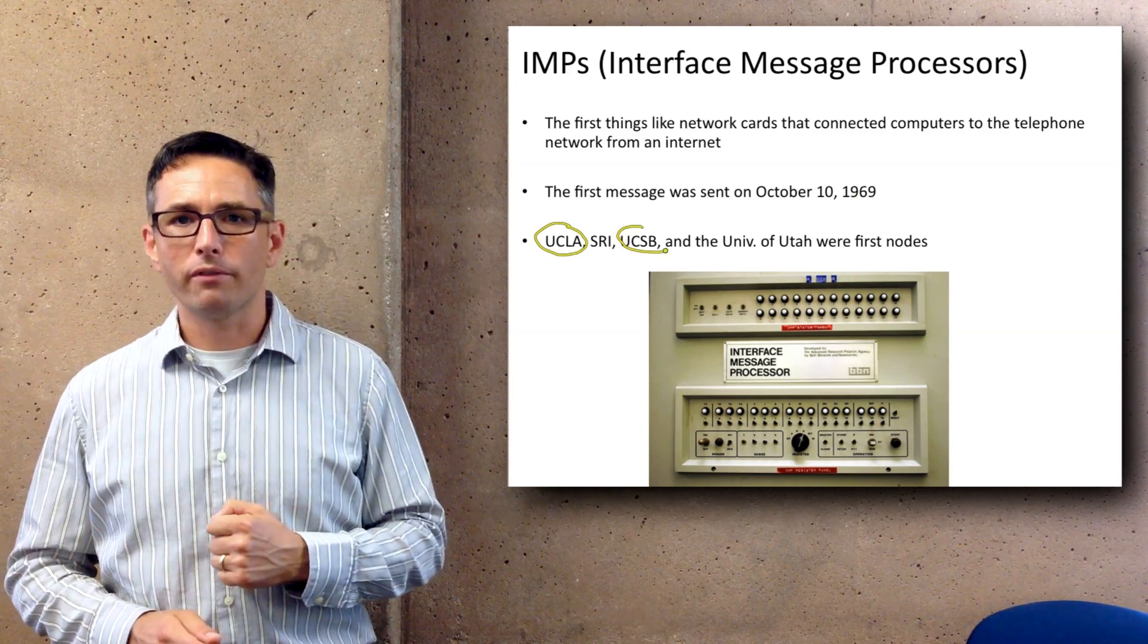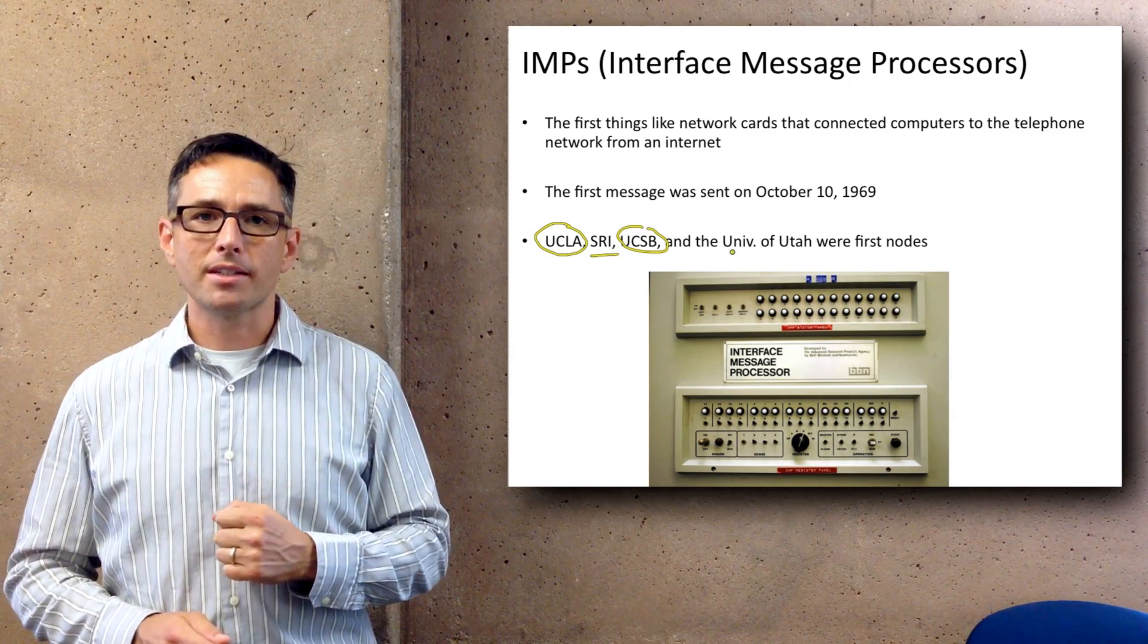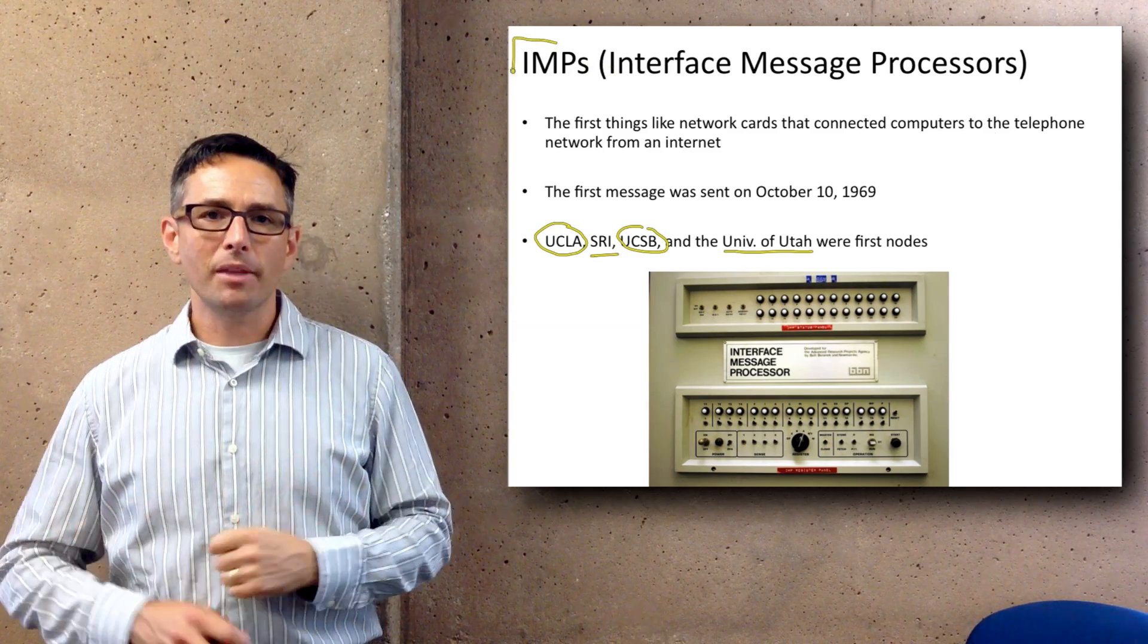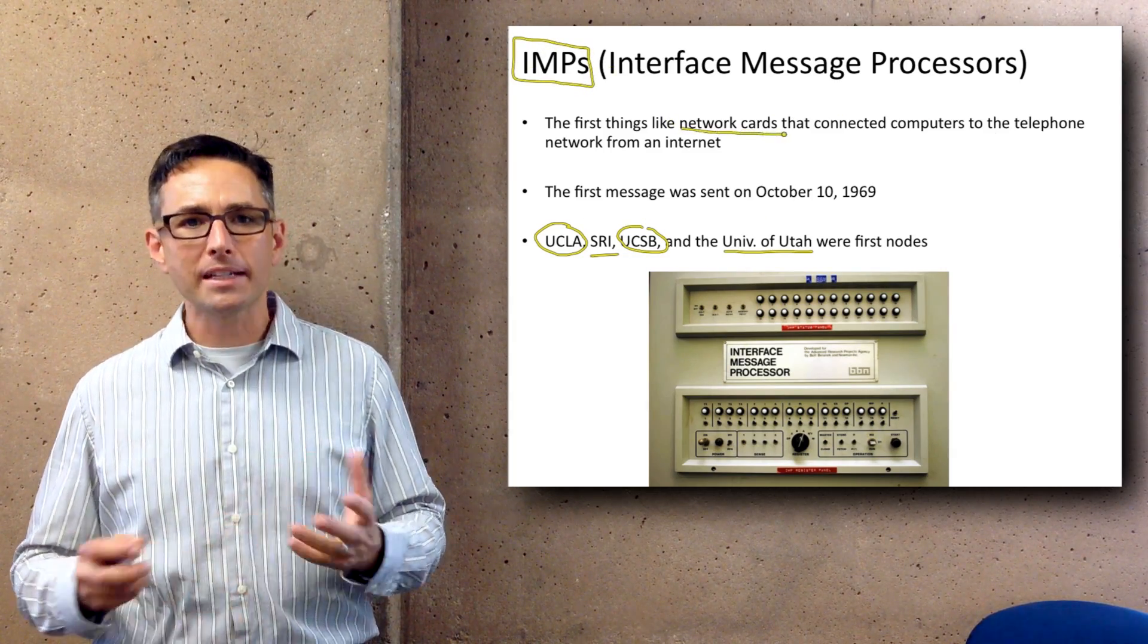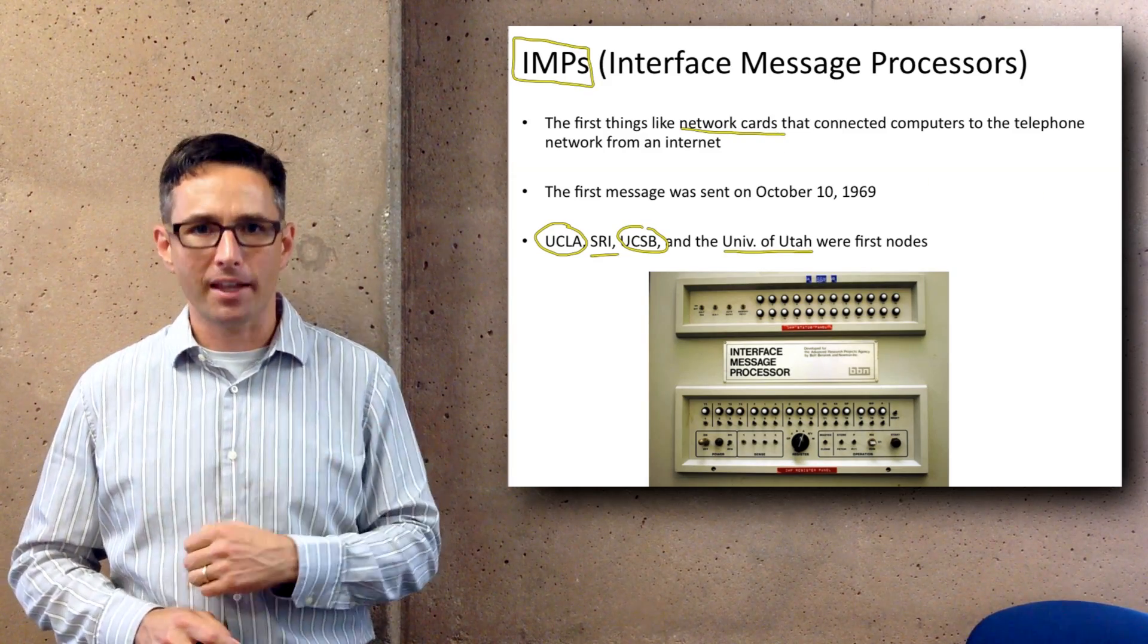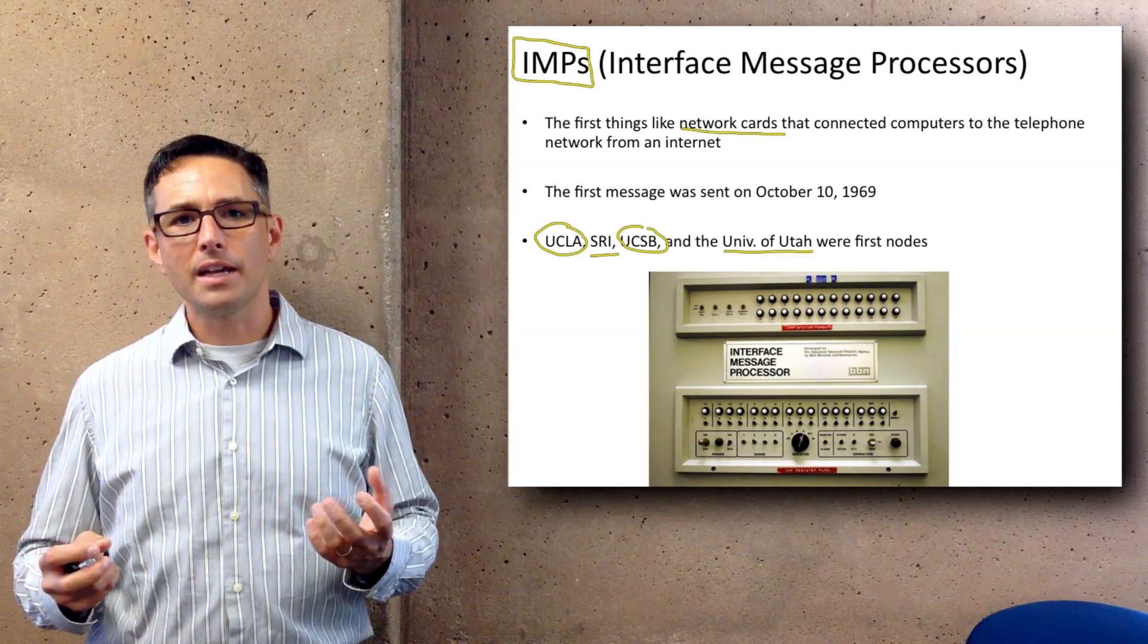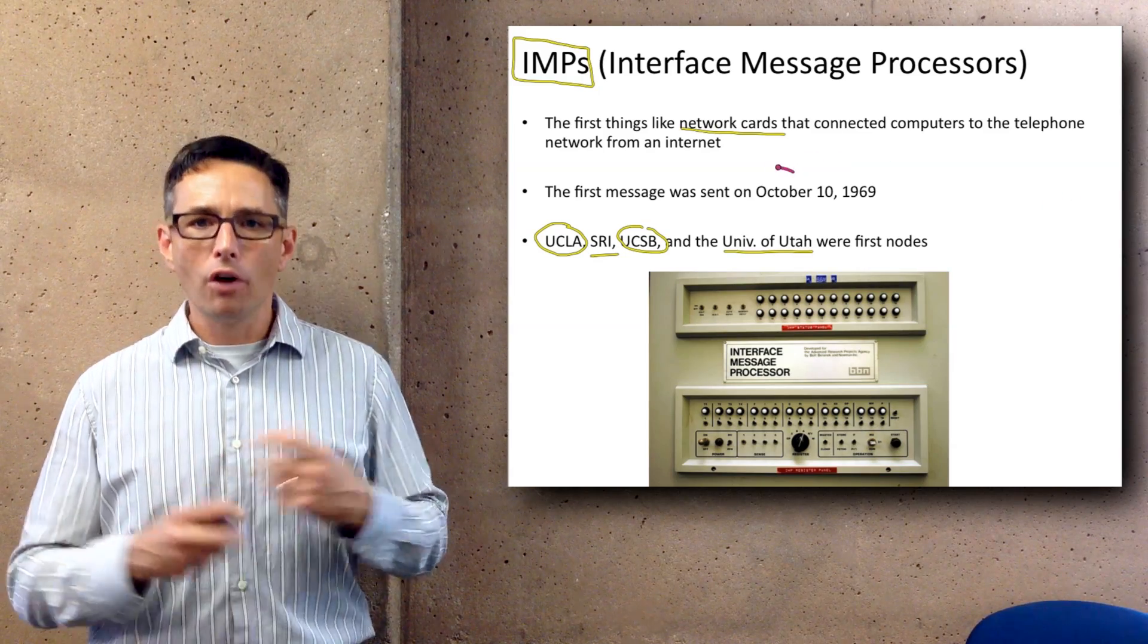The other two nodes were SRI, up at Stanford, and the University of Utah. They used something called IMPs, interface message processors, which were basically the first network cards but they didn't sit inside a computer. These IMPs connected these four locations and enabled packets to be switched between these different locations over one circuit.